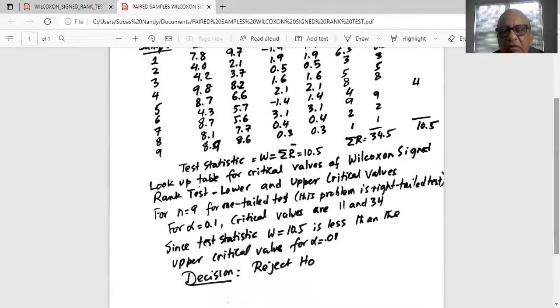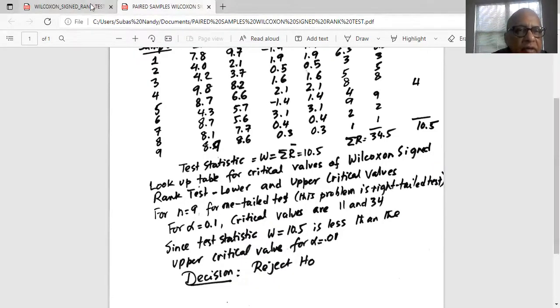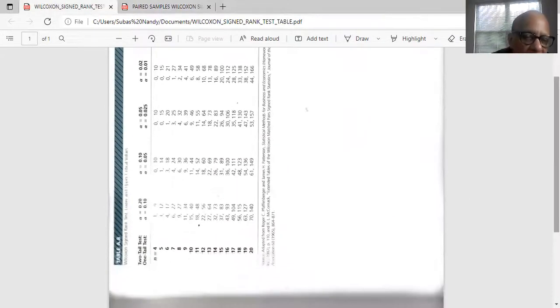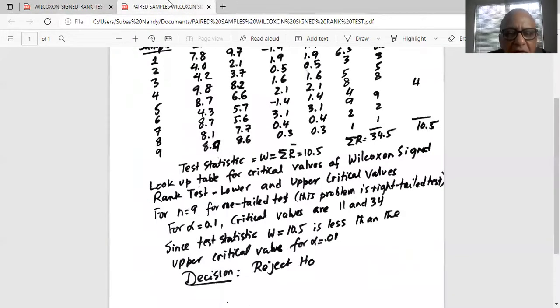So what is the table that we used? Okay again this is the table we look up, n equal to 9 in the first column. Then the second column for one tail test alpha is equal to 0.1 and critical values are 11 and 34. This is a right tail test so we are interested in the upper critical value which is 34 as I said.